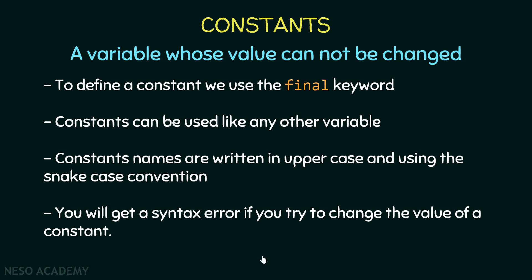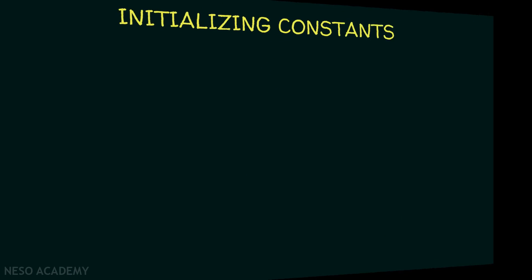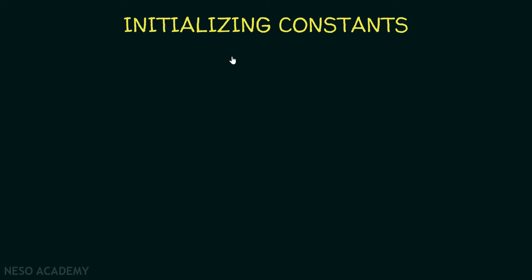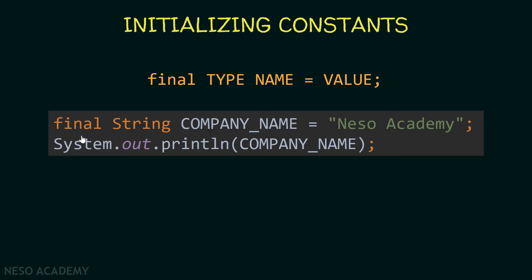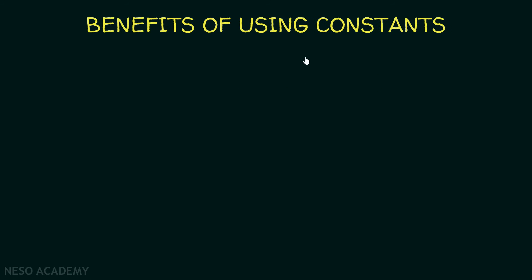You will get a syntax error if you try to change the value of a constant. So let's see how we can create a constant. As we said, we use the final keyword and then we initialize a variable normally. For example: final String COMPANY_NAME = "Naso Academy". After that we are printing COMPANY_NAME just like any other variable. COMPANY_NAME is a constant because we are using the final keyword, and after the final keyword we initialize it just like any other variable.